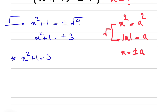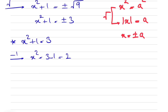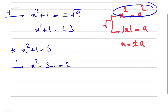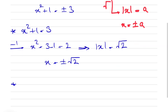Starting with x² + 1 = 3, we subtract 1 from each side, giving x² = 2. Since x² = a² means |x| = √a, we get x = ±√2.